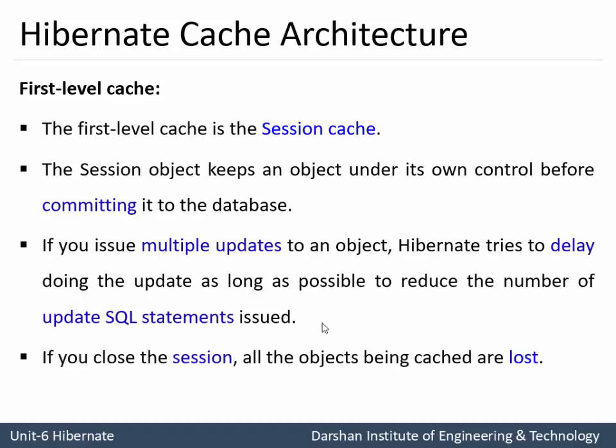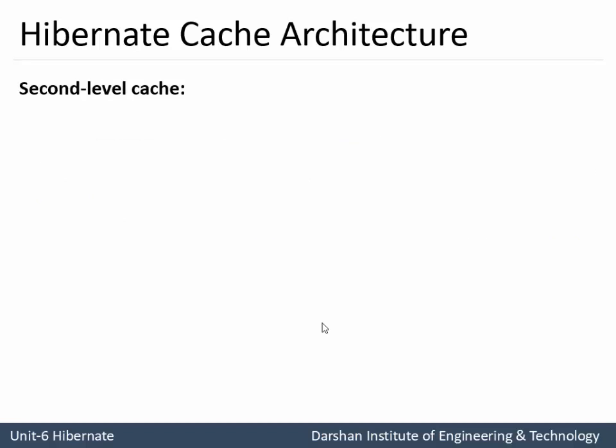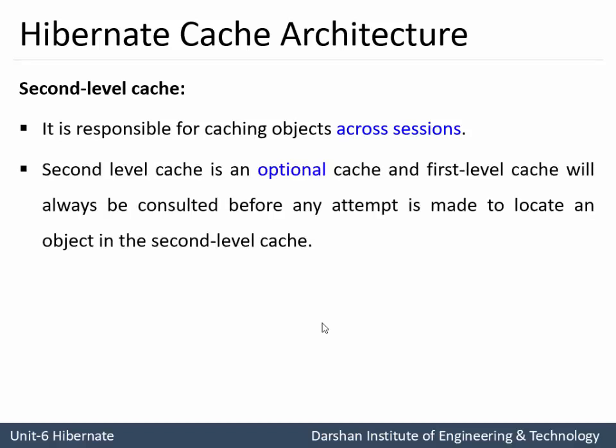If you close the session, all objects being cached are lost, because the first level cache is a session level cache. The second level cache, known as session factory level cache, is responsible for caching objects across sessions. So if a session is closed, the object is unavailable in the first level cache but may still be available in the second level cache. The second level cache is optional, and the first level cache will always be consulted before any attempt is made to locate an object in the second level cache.